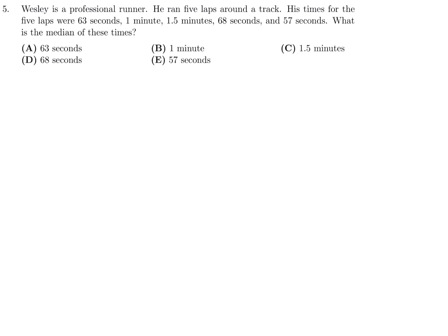Wesley is a professional runner who ran five laps. His times were 63 seconds, 1 minute, 1.5 minutes, 68 seconds, and 57 seconds. To find the median, arrange from smallest to largest: 57, 60, 63, 68, 90 seconds. The middle number is 63. Number 5, the answer is A.